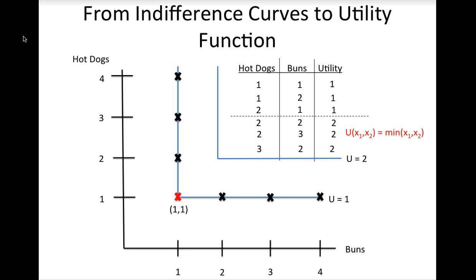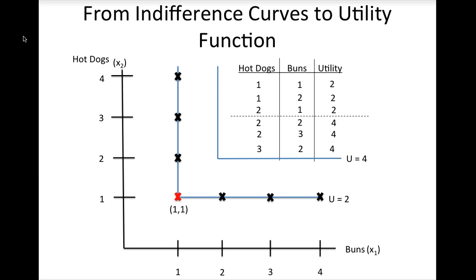Therefore, we can write the utility function as u of x1 and x2 equals the minimum of x1 and x2, where x1 represents the number of buns and x2 represents the number of hot dogs. Note that this function is completely arbitrary. If we label the utility of the first indifference curve at 2 and the second at 4, then all the utility values in the table will double, and the utility function becomes 2 times the minimum of x1 and x2. Another equivalent function would be the minimum of 2x1 and 2x2. For goods that are perfect complements, the utility function will always be some form of the minimum function. We will try to find a general formula for perfect complements as an in-class exercise.